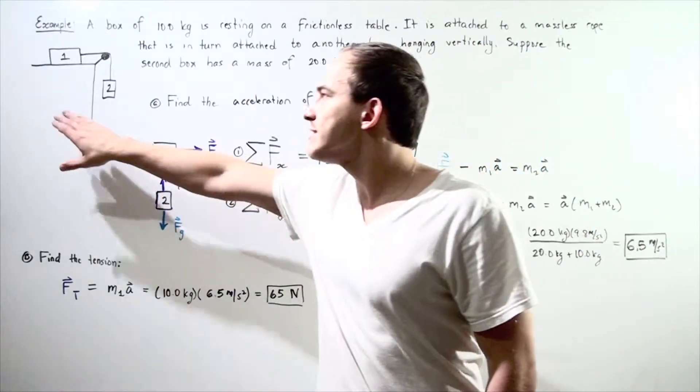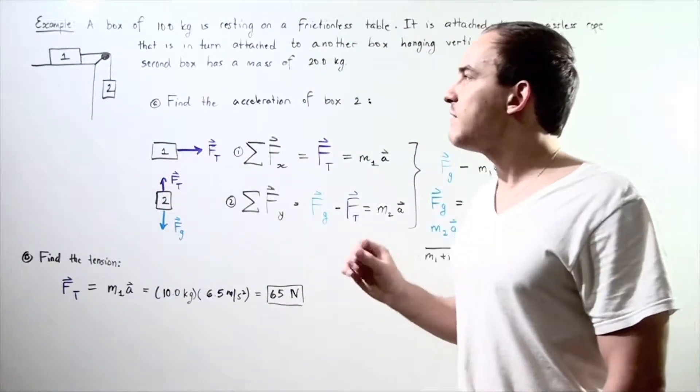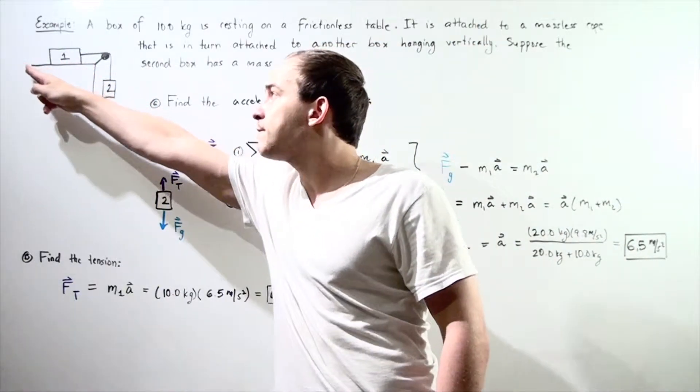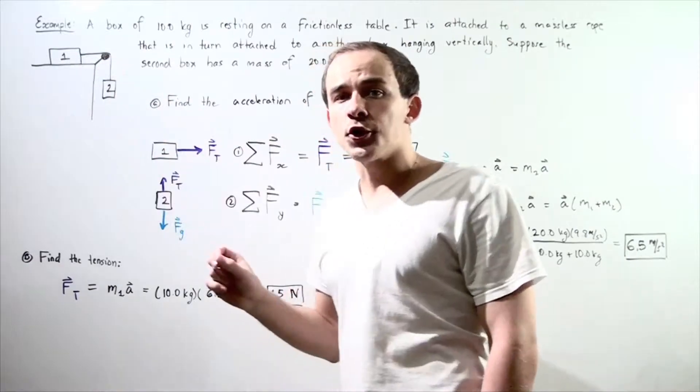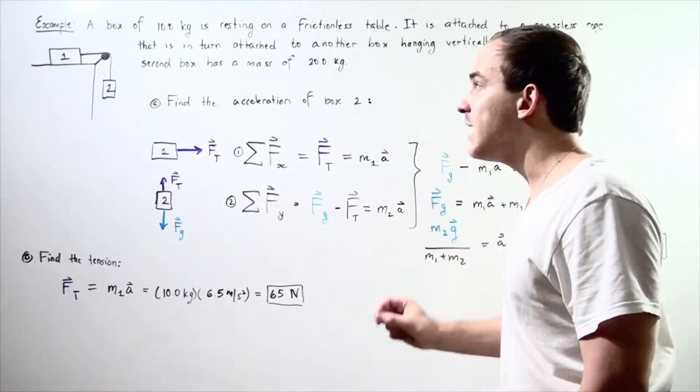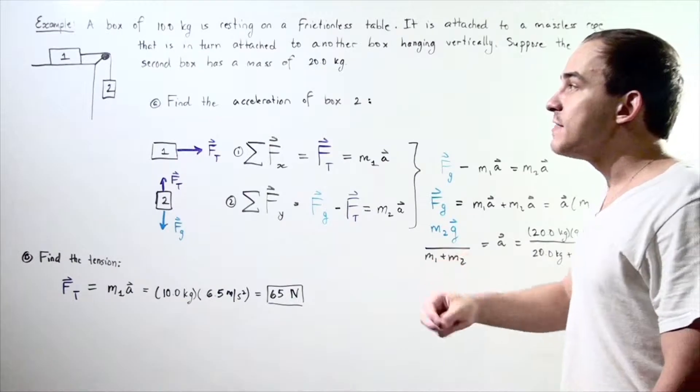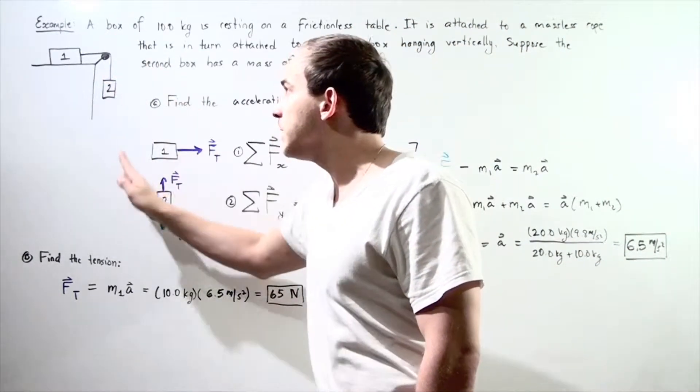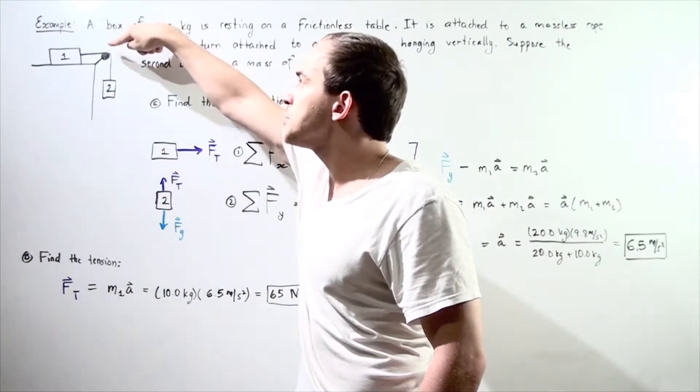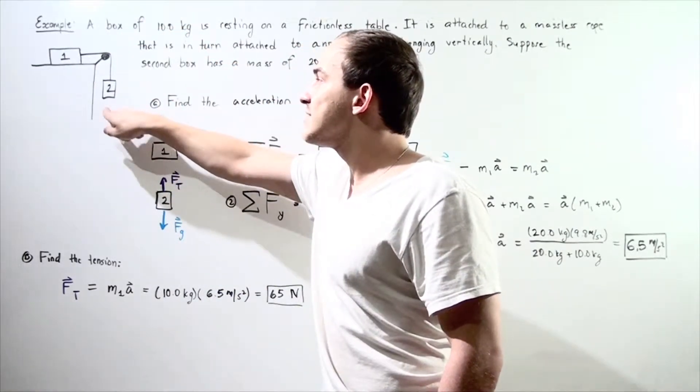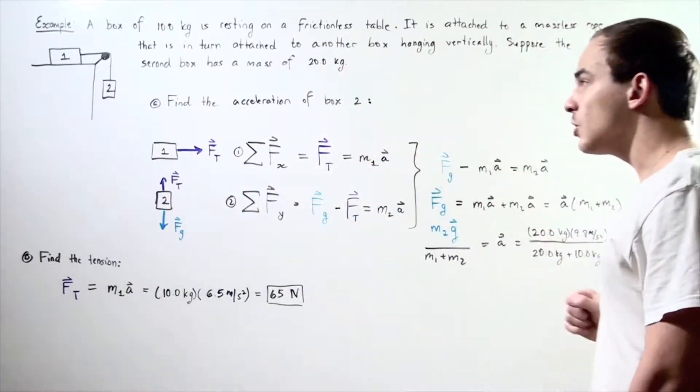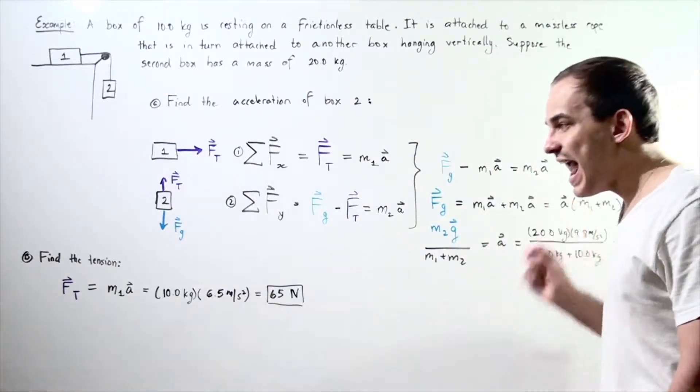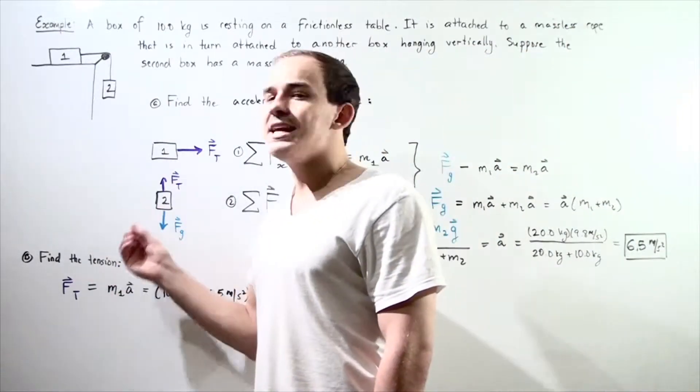Let's look at the following setup. We have a box with a mass of 10 kilograms resting on a frictionless horizontal surface. This box is attached via a massless rope to a second box that is hanging vertically via a frictionless pulley. The mass of the second box is 20 kilograms. We need to find the acceleration of box two and the tension in the rope.